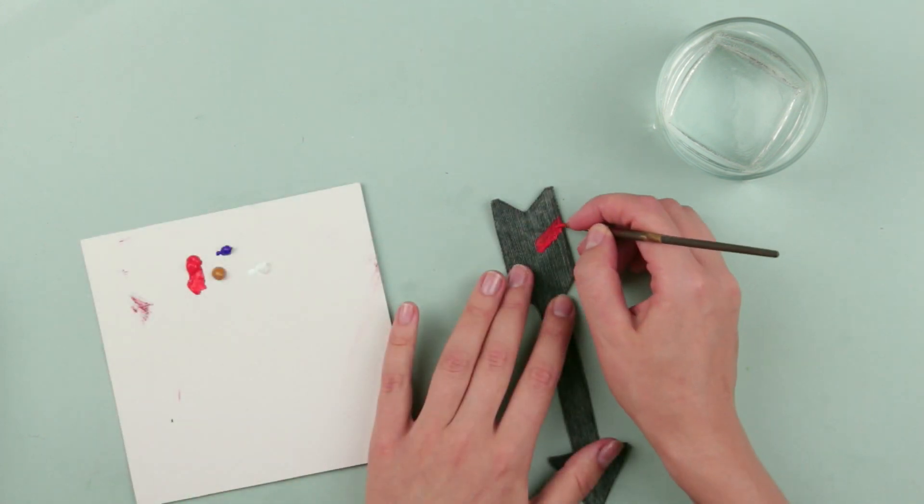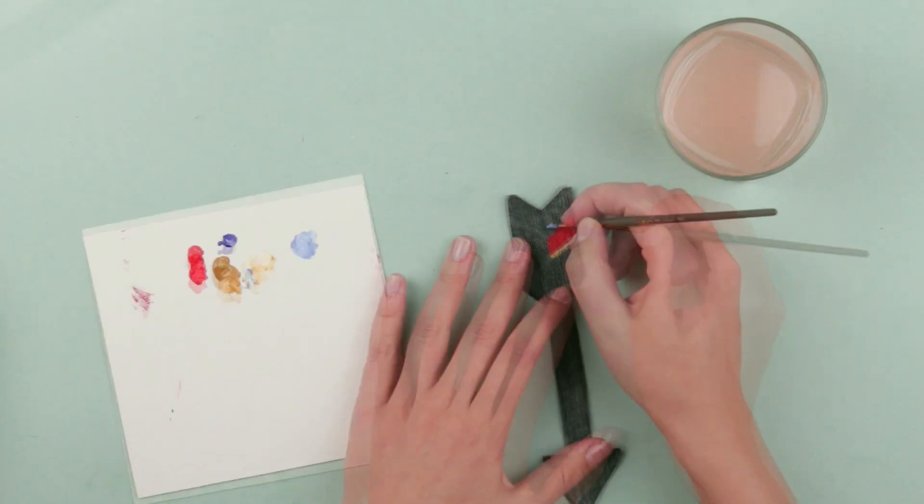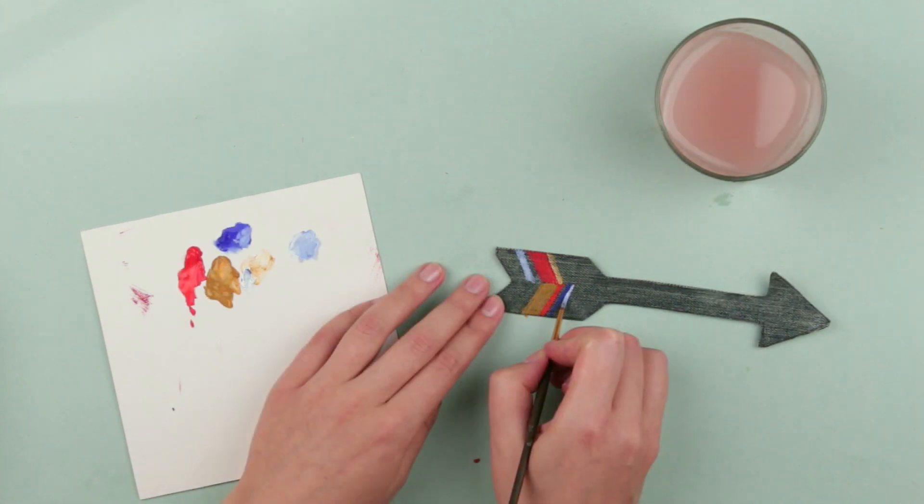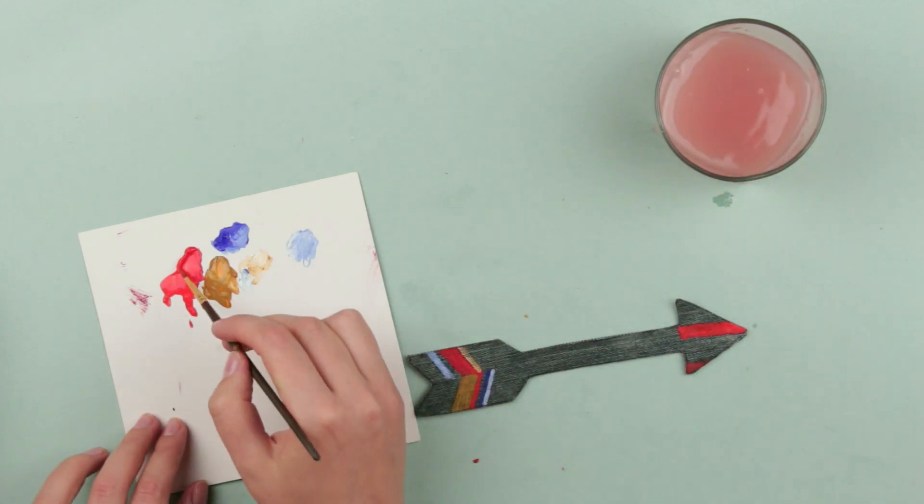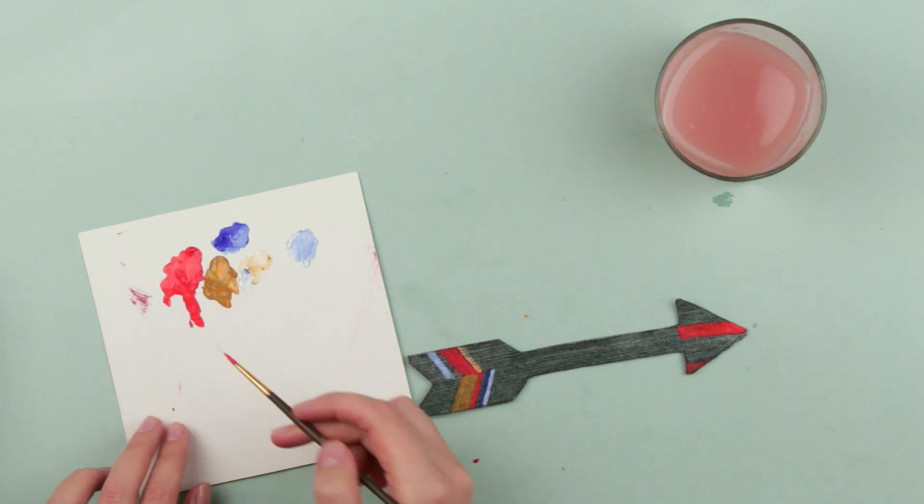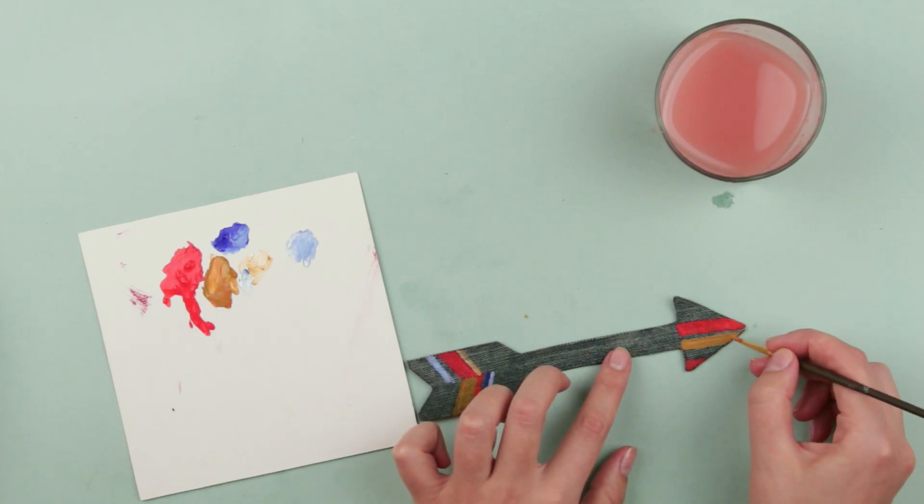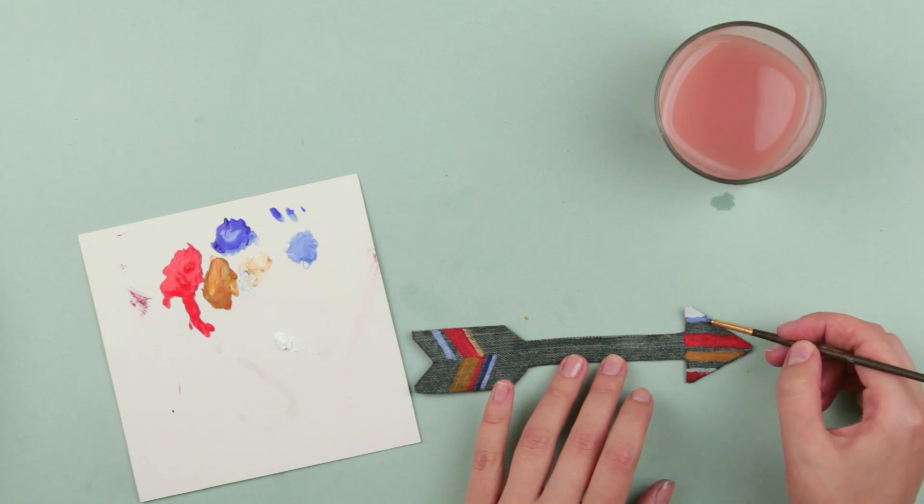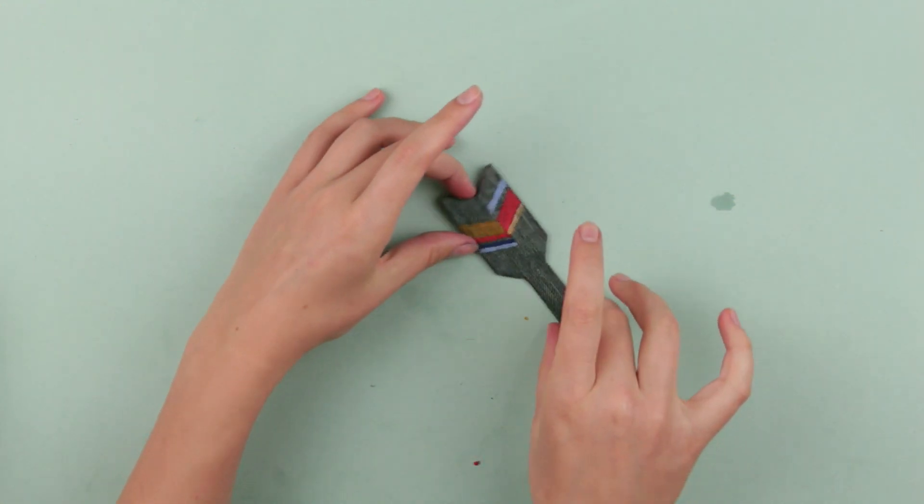Paint the fletching first. Make strips imitating feathers. Decorate the head. The vertical pattern will emphasize a forward direction. The bright arrow clip is ready.